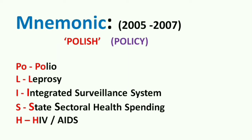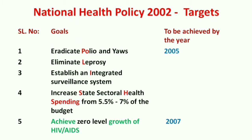POLISH stands for: P-O stands for Polio, L stands for Leprosy, I stands for Integrated Surveillance System, S stands for State Sectoral Health Spending, and H stands for HIV/AIDS. This covers the targets of National Health Policy 2002 up to 2007.